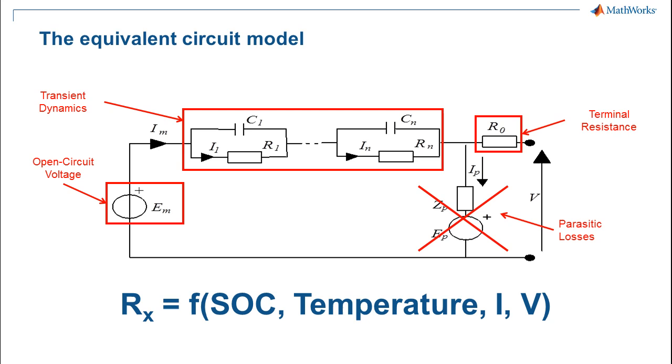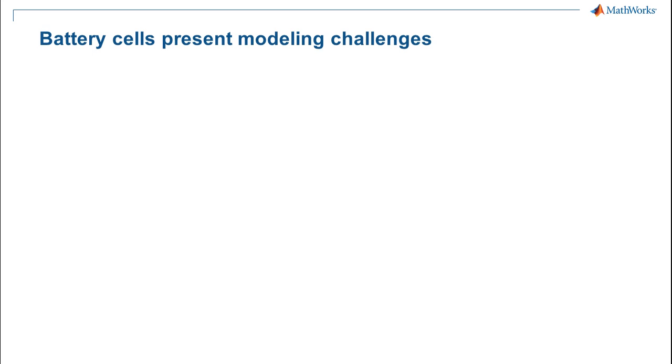For some chemistries, parasitic charging losses and self-discharge are significant. However, these are minimal with lithium chemistries and are often ignored. Finally, each of these elements in the circuit is a function of state of charge, temperature, and sometimes current or voltage. These relationships may be highly nonlinear.